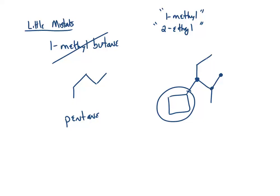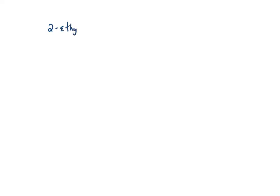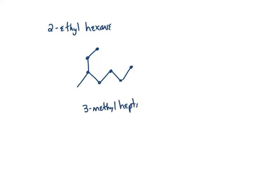Why can't you have a 2-ethyl? If I said I have 2-ethylhexane — here's my hexane, and here's my ethyl — that's actually 1, 2, 3, 4, 5, 6, 7 carbons. This is really 3-methylheptane. You can't have a 2-ethyl group because it actually means it's part of the longest chain. The idea is that you really can't have things on the end — the ethyl group just becomes part of the main chain.